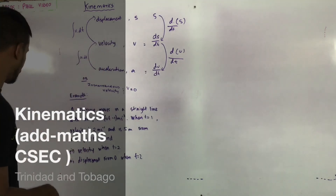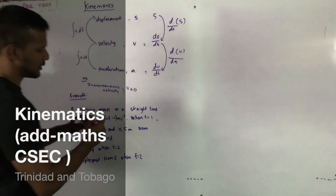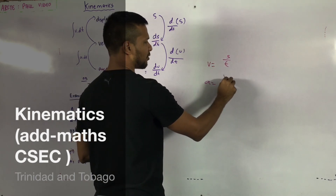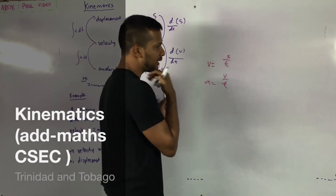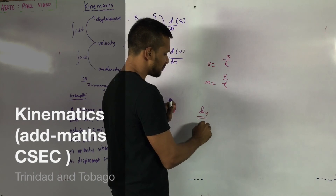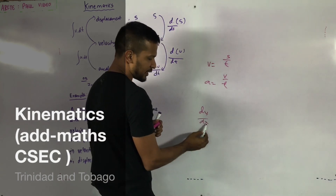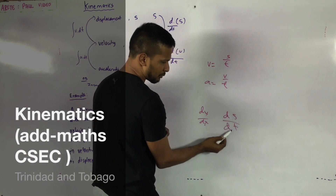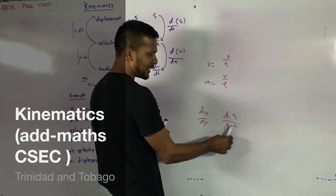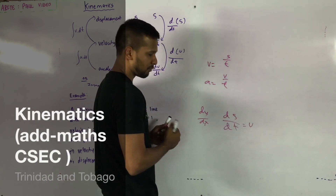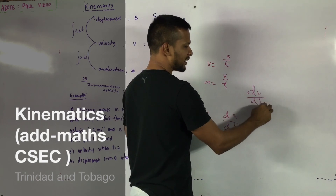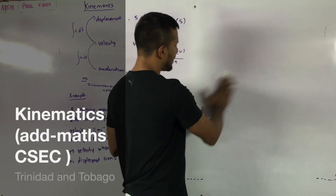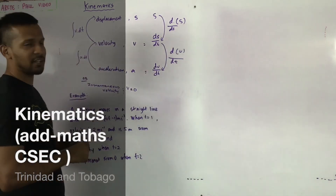If you recall, velocity is how displacement changes in time, and acceleration is how velocity changes in time. If you look at this carefully, we know that dy/dx means how y is changing with respect to x. So ds/dt means how s is changing with respect to t. Since s and t gives us velocity, and if v is changing with respect to t, that must represent acceleration.